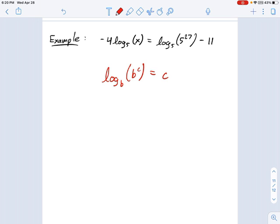If I want to rewrite this equation, I could say negative 4 log base 5 of x equals, well, what's this thing? Log base 5 of 5 to the 27. Just look at this equation. You'll see that is equal to 27. We still have that minus 11, and this becomes a lot easier to simplify now.